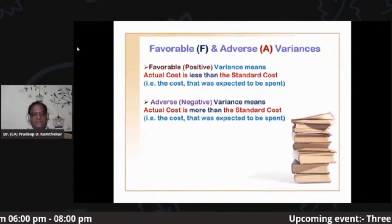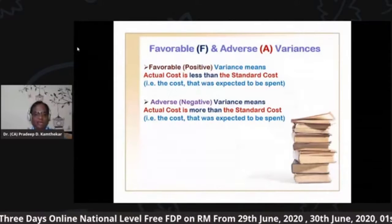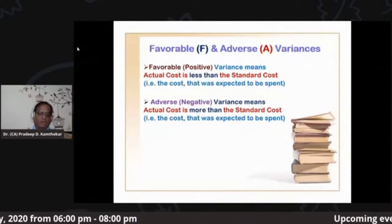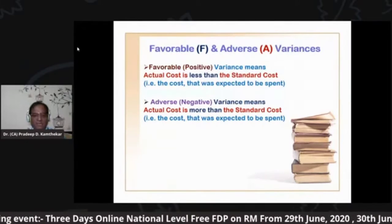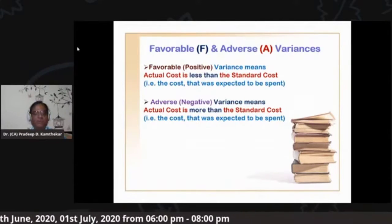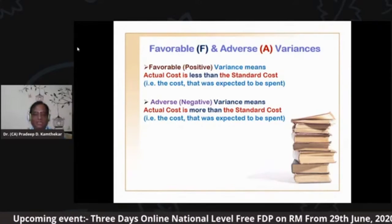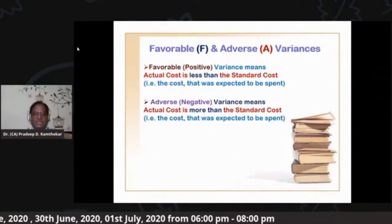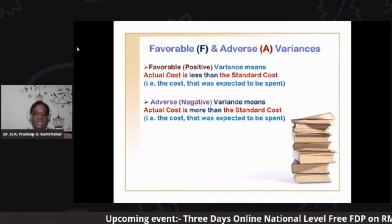If there is a difference, it could be a positive difference or a negative difference. A positive difference is when the standard cost is more and the actual cost is less — meaning the cost the business thought of incurring was more, but in reality the business incurred less. This will make management happy, so that is a positive difference, which we call a favorable variance. Whenever we calculate variance in standard costing and standard cost is more than actual cost, we write capital F in brackets after the answer — that means favorable variance.